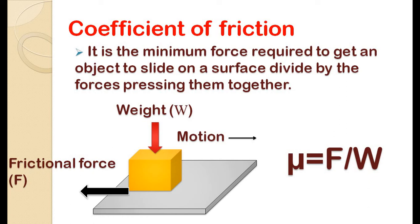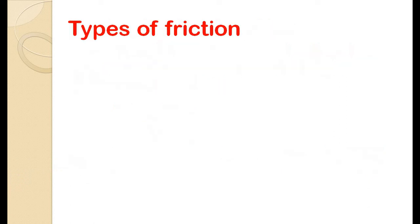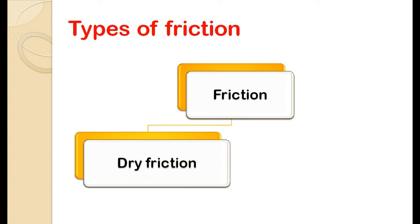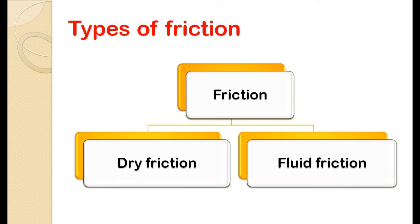Now we will move on to the types of friction. Basically, friction is categorized into two types depending upon the state of surfaces that are in contact with each other or sliding over each other.